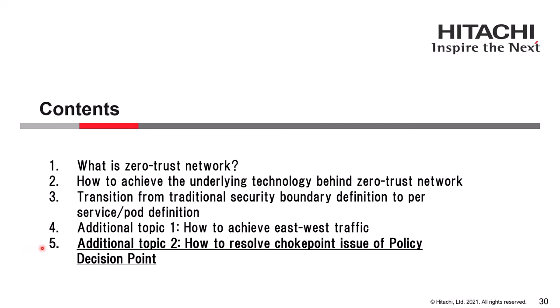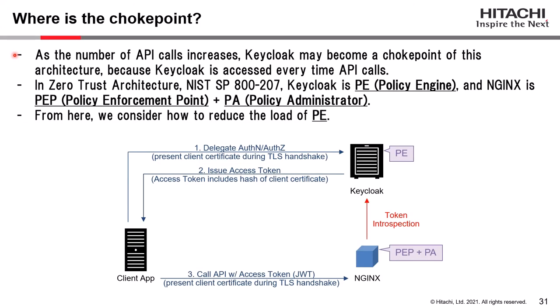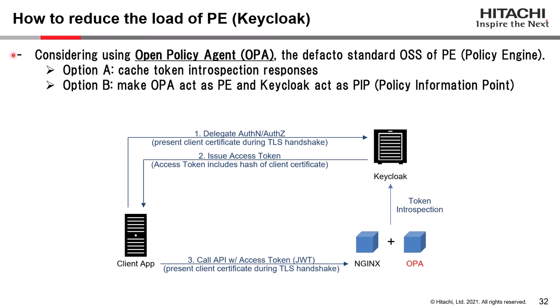Finally, additional topic 2: how to resolve the choke point issue of the policy decision point. As the number of API calls increases hugely, Keycloak may become a choke point of this architecture because Keycloak is accessed via token introspection on every API call. Following Zero Trust architecture defined by NIST SP 800-207, Keycloak plays the role of policy engine, and NGINX plays the role of policy enforcement point and policy administrator. We consider using Open Policy Agent (OPA), the de facto standard OSS policy engine, to reduce the load on the policy engine. There are two options.